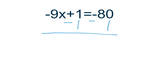You subtract because it has a positive 1 right here, so you do the opposite which is subtracting. You cancel these two out and you subtract negative 80 with negative 1 which will give you negative 81.